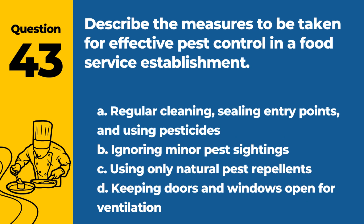Question 43. Describe the measures to be taken for effective pest control in a food service establishment. A. Regular cleaning, sealing entry points, and using pesticides. B. Ignoring minor pest sightings. C. Using only natural pest repellents. D. Keeping doors and windows open for ventilation. Answer: A. Regular cleaning, sealing entry points, and using pesticides. Effective pest control involves regular cleaning, sealing potential entry points, and appropriately using pesticides when necessary.